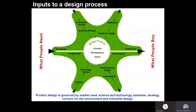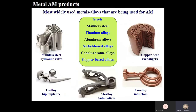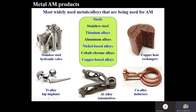Before going into detail, let us see what are the products of additive manufacturing. Mainly the products by additive manufacturing are non-load bearing right now. Here you can see copper heat exchangers, copper alloy inductors, stainless steel, titanium alloys, and many aluminum alloys and other materials being used to make different components by additive manufacturing.